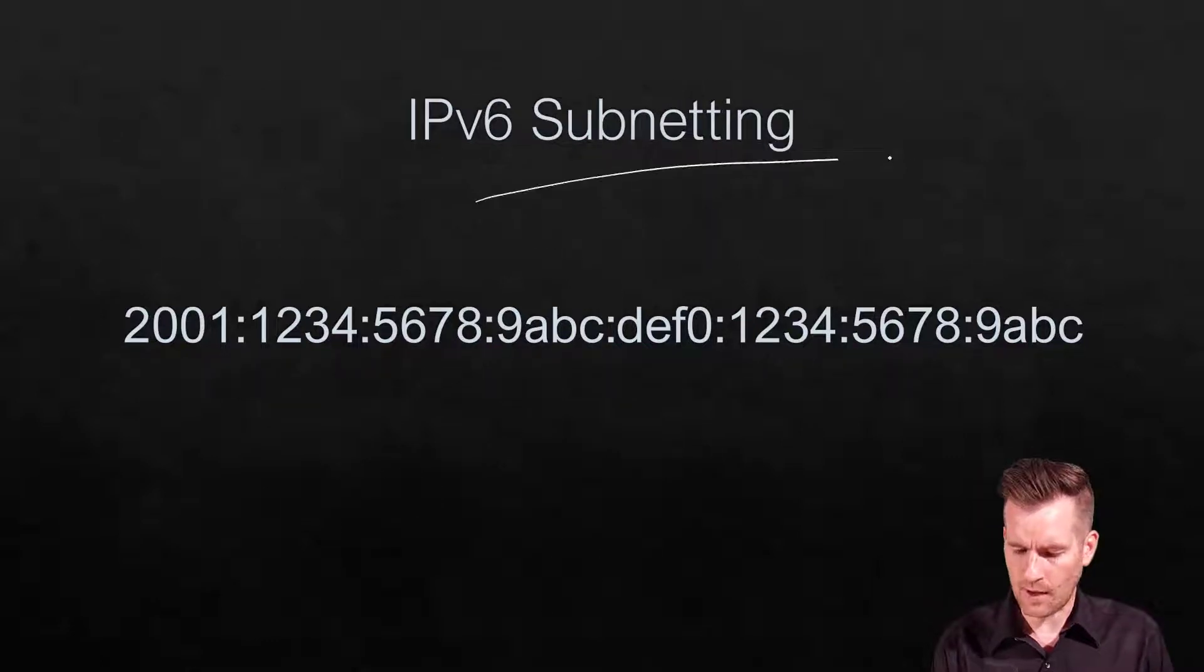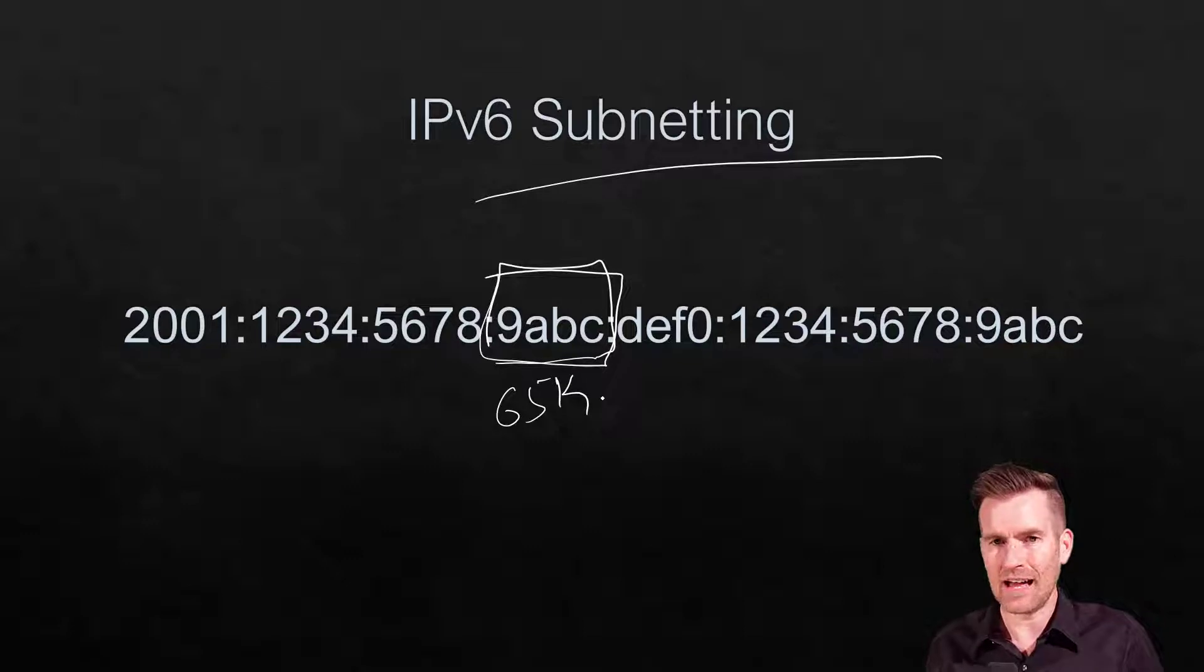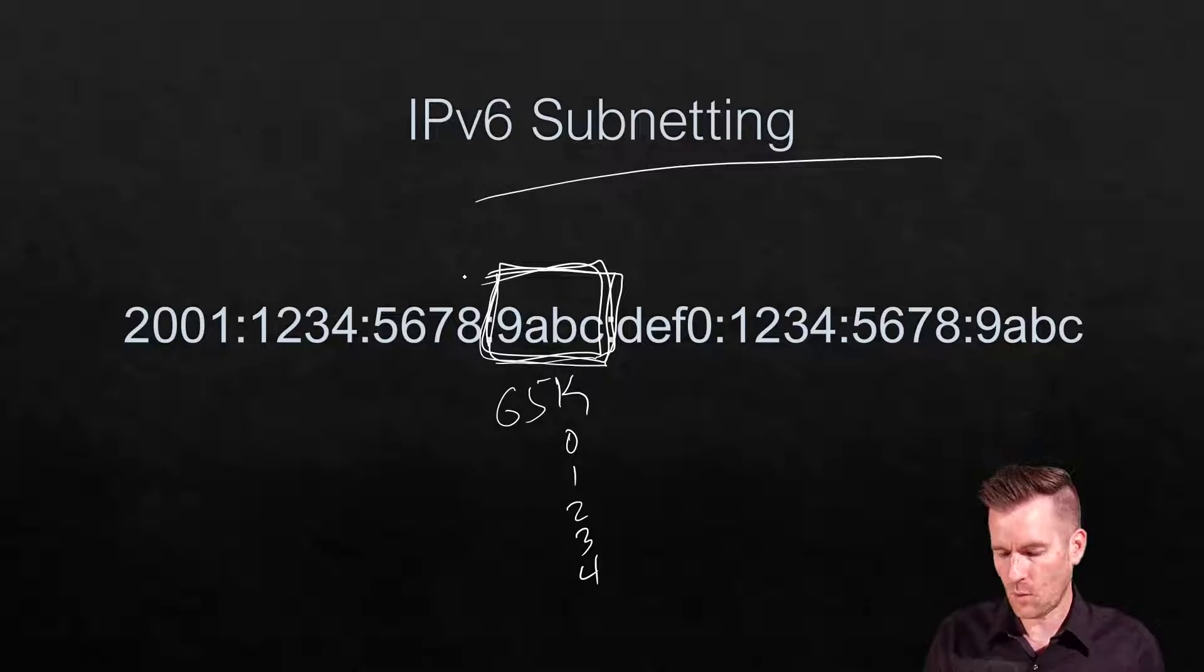That's the prefix length in IPv6. Quick note about subnetting: we often subnet within a specific hextet. That hextet has 16 bits - 2 to the 16th power is 65,536 subnets. We can count up 0, 1, 2, 3, 4 and so on. We usually have a lot of freedom with how many subnets we can create on our networks.